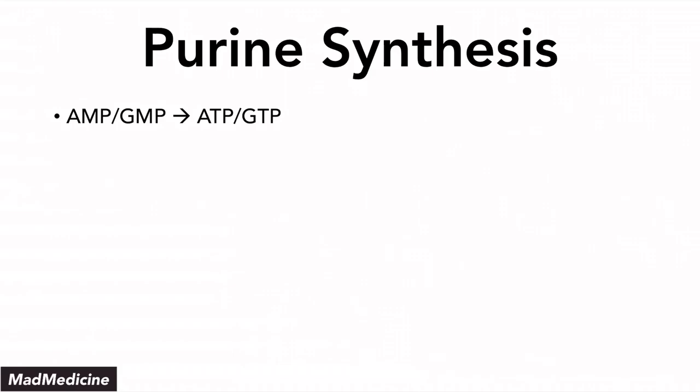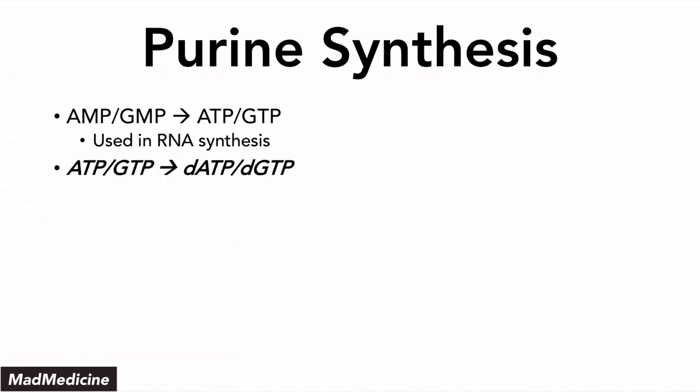Purine synthesis is also important because after you create AMP and GMP, you then create ATP and GTP, which are mainly used in RNA synthesis. When ATP and GTP are formed, removing the OH group produces dATP and dGTP — the molecules used in DNA synthesis. This step is very important because it utilizes the enzyme ribonucleotide reductase.